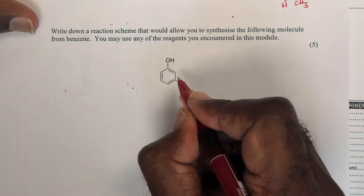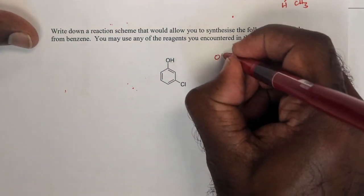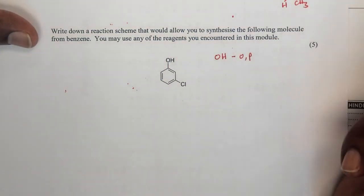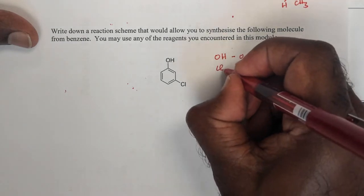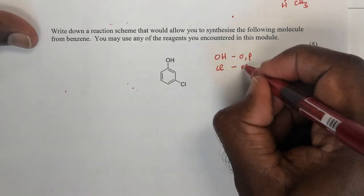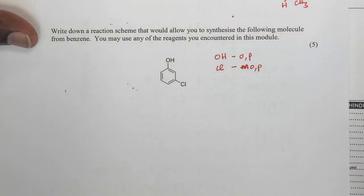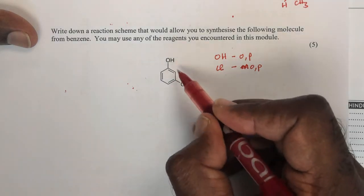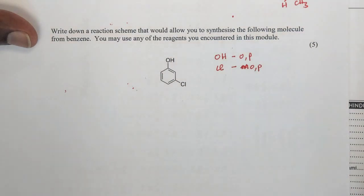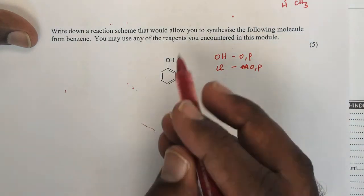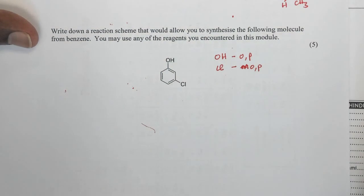So my hydroxy group is ortho-para directing, but my chlorine group is meta directing. Sorry, my chlorine group is also ortho-para directing. So both these groups are ortho-para directing, which leaves me with a problem, because I have to now orientate these two groups such that they are meta directing. Which means I need to use a meta-director somewhere in my synthesis. So I think a little bit further before I start. How can I use a group that is a meta-director and then convert it to something else?